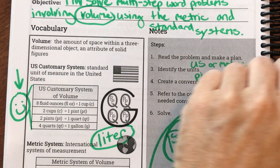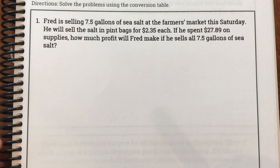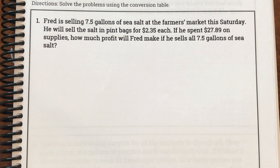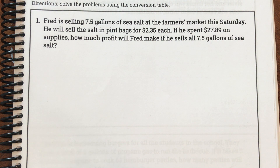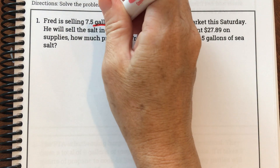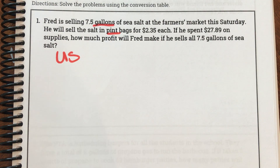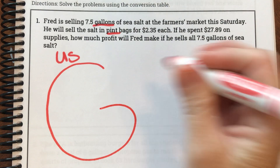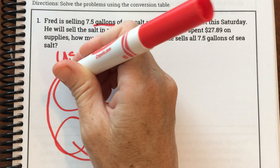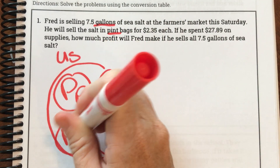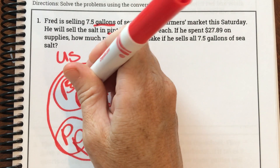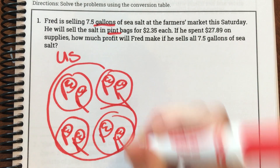Let's jump right in with my first problem. It says Fred is selling 7.5 gallons of sea salt at the farmers market this Saturday. He will sell the salt in pint bags for $2.35 each. If he spent $27.89 on supplies, how much profit will Fred make if he sells all 7.5 gallons of sea salt? I notice the words gallons and pint, so I know we are doing the US system. I'm going to draw my gallon man with four queens, two princesses each, and two cats each, right away so I can get started.